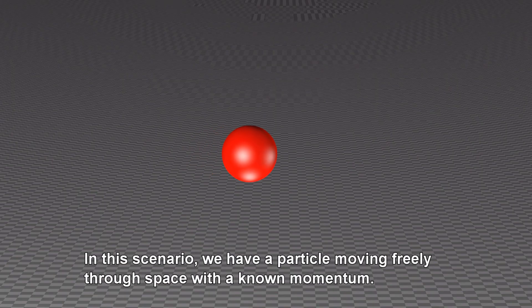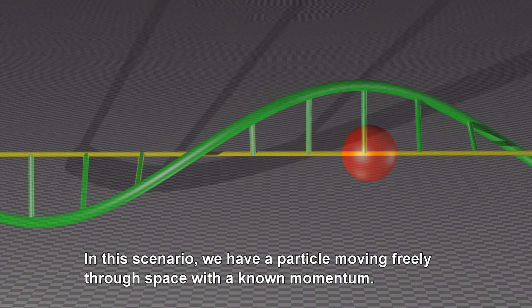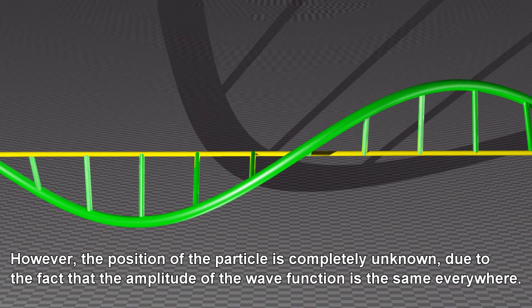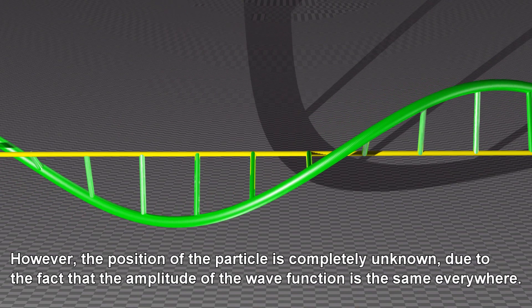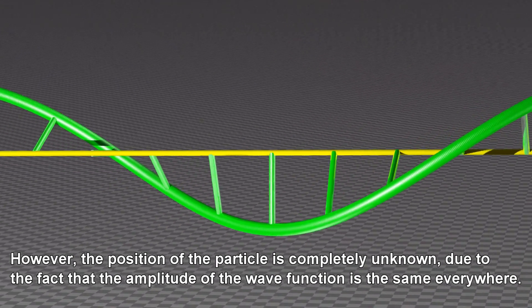In this scenario, we have a particle moving freely through space with a known momentum. However, the position of the particle is completely unknown, because the amplitude of the wave function is the same everywhere.